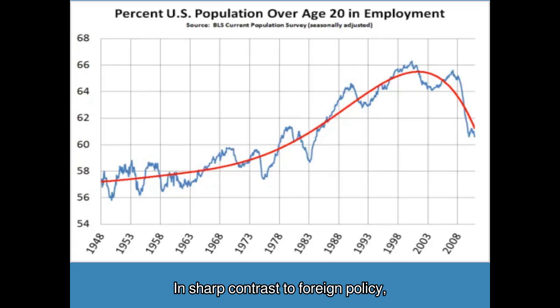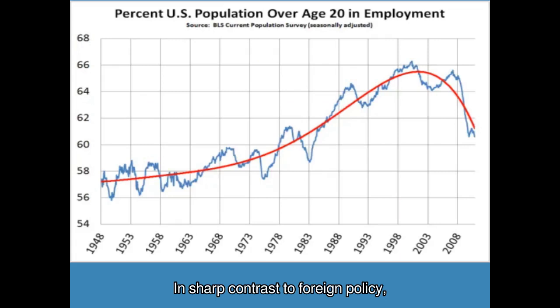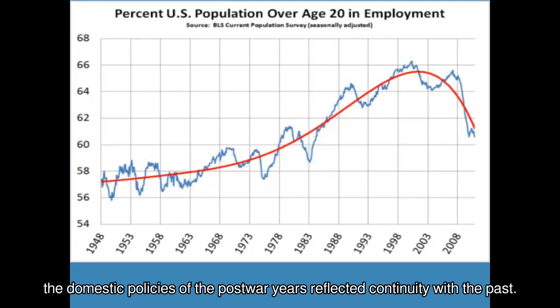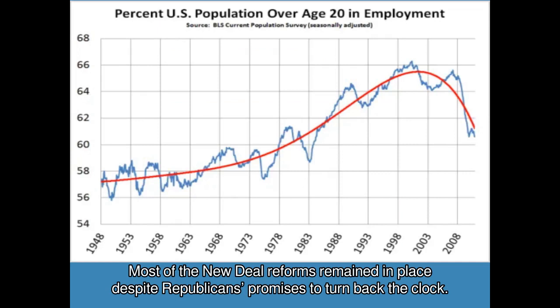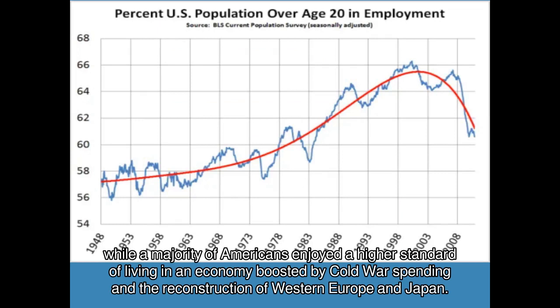In sharp contrast to foreign policy, the domestic policies of the post-war years reflected continuity with the past. Most of the New Deal reforms remained in place despite Republicans' promises to turn back the clock. Consequently, the poor and minorities suffered even while a majority of Americans enjoyed a higher standard of living in an economy boosted by Cold War spending and the reconstruction of Western Europe and Japan.